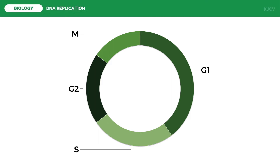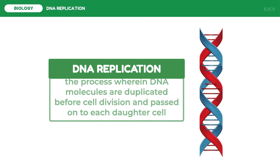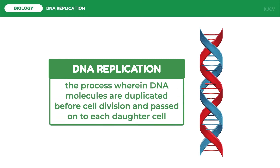In this lesson we're going to focus on the S phase of the cell cycle, in which the genetic material is replicated for cell division. DNA replication is the process wherein DNA molecules are duplicated before cell division and passed on to each daughter cell. DNA replication has three general steps.